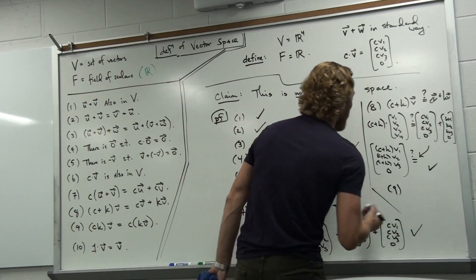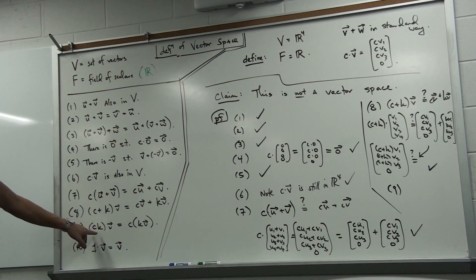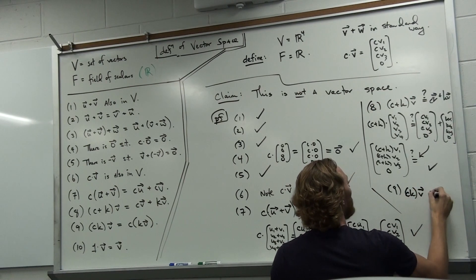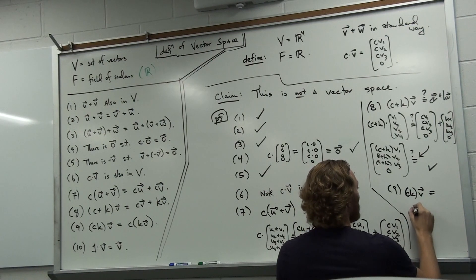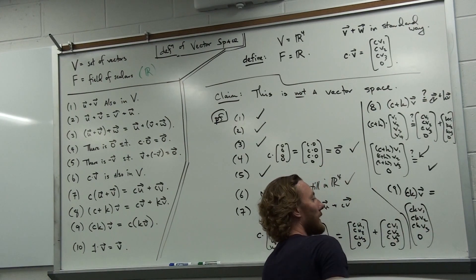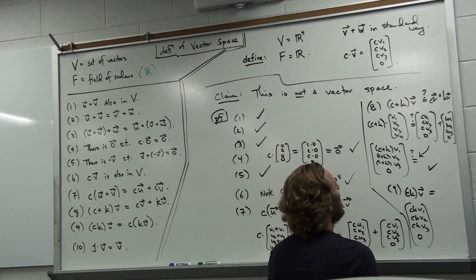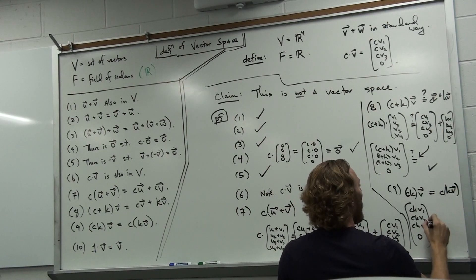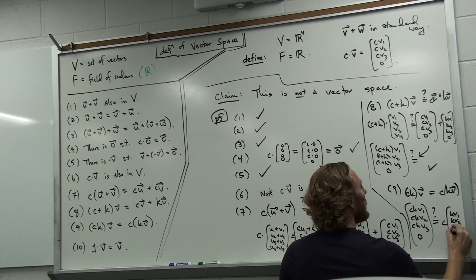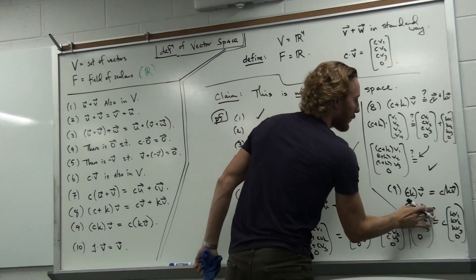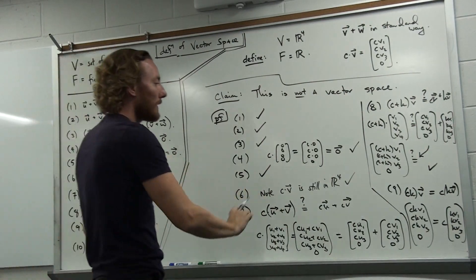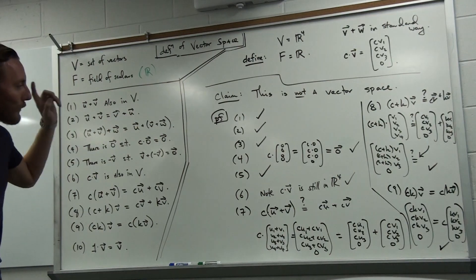What about stipulation nine? When you multiply two scalars c and k times a vector, you should get the same thing as c times the scalar multiple k of the vector. On the left: ck times v gives ckv1, ckv2, ckv3, zero. On the right: c times kv — and kv is kv1, kv2, kv3, zero — so distributing c through still gives ckv1, ckv2, ckv3, zero. These are equal. So for the first nine stipulations, this modified scalar multiplication seems to work.